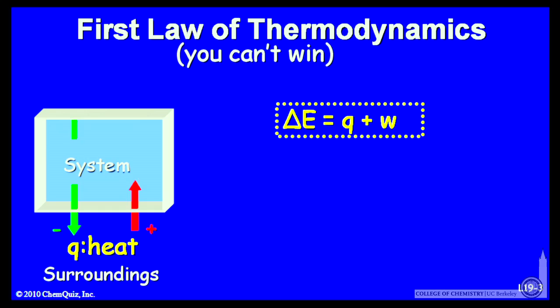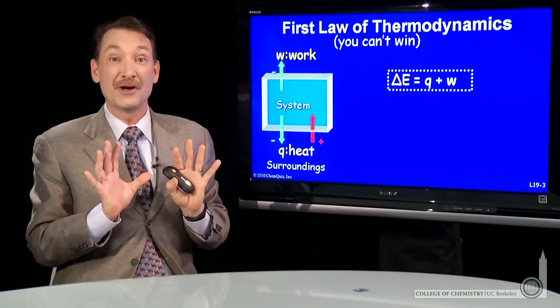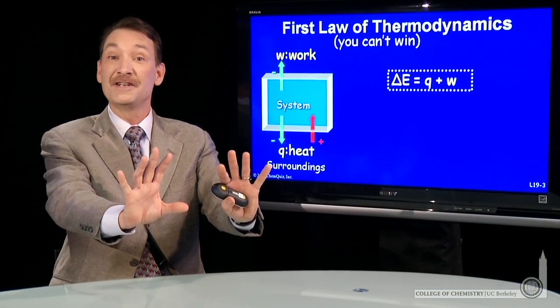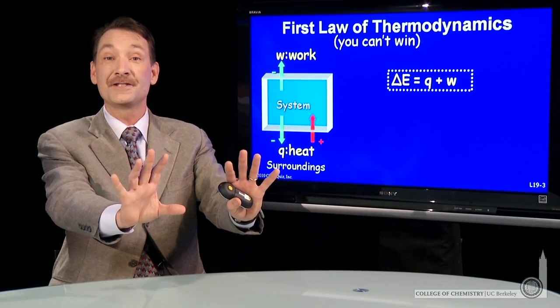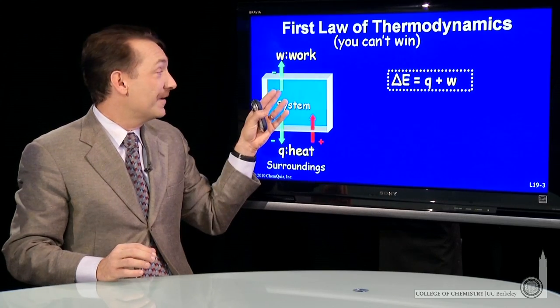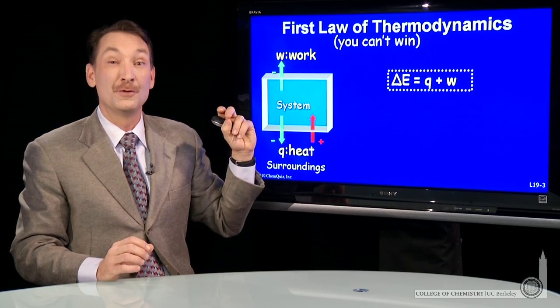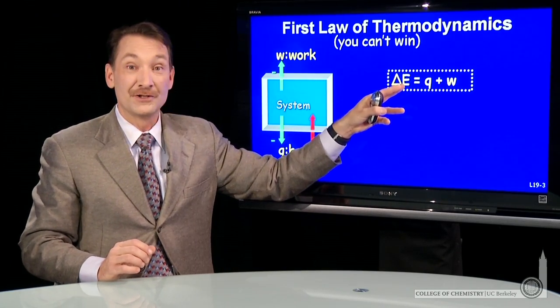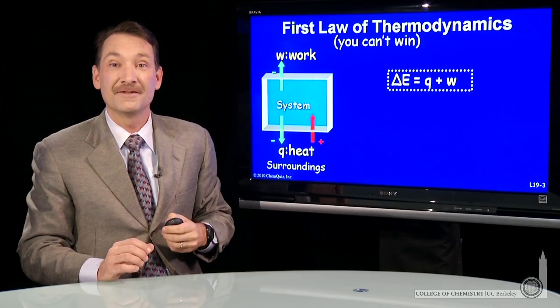And we'll do a similar thing for work. If the system does work, we'll give that work a negative sign. That is, it takes some of your energy to do work. That's kind of a natural thing that you might already understand. If some of your energy is used to do work, then that should lower your internal energy and will give that work a negative sign.